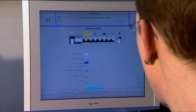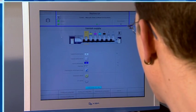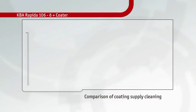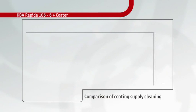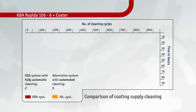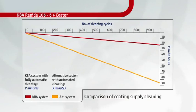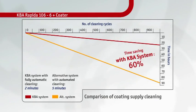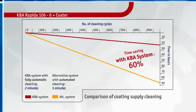A switch from dispersion to UV coating or vice versa is thus accomplished in around 8 minutes. And where a changeover involves merely two different dispersion or UV coatings, this change time is reduced to just 1-2 minutes.